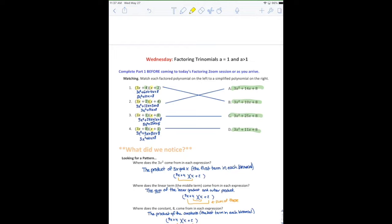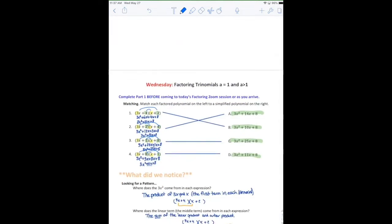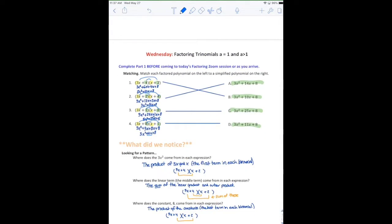But depending on the order here, we notice that here we get 4x plus 6x to give us the 10x in the middle. Here we'd get 2x plus 12x to give us the 14x in the middle. So that's why you're going to end up when you're factoring having to go through a bunch of combinations to figure out how we actually factor.